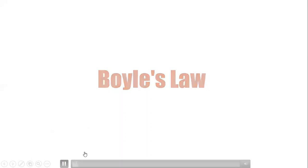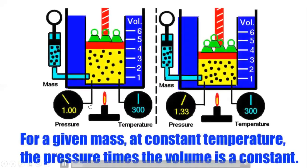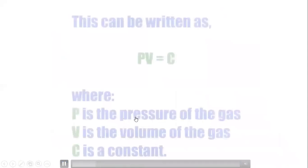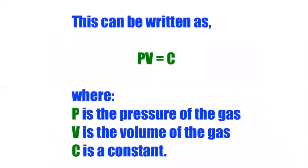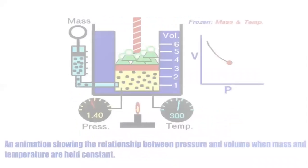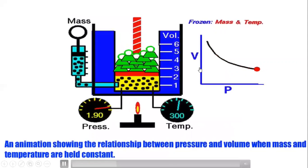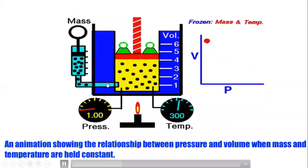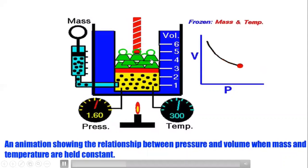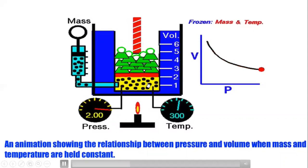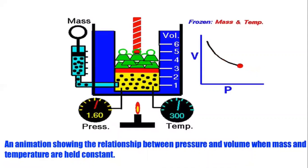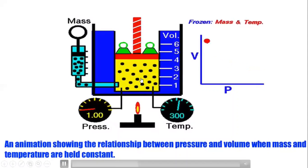Let's look at the animation for Boyle's Law. This is an experimental setup showing temperature, pressure, and mass. We will keep mass and temperature constant and change the pressure. PV equals constant, where P is pressure, V is volume, and C is the constant. Temperature is not changing. When we give load on the piston, pressure increases and the volume of gas is compressed.